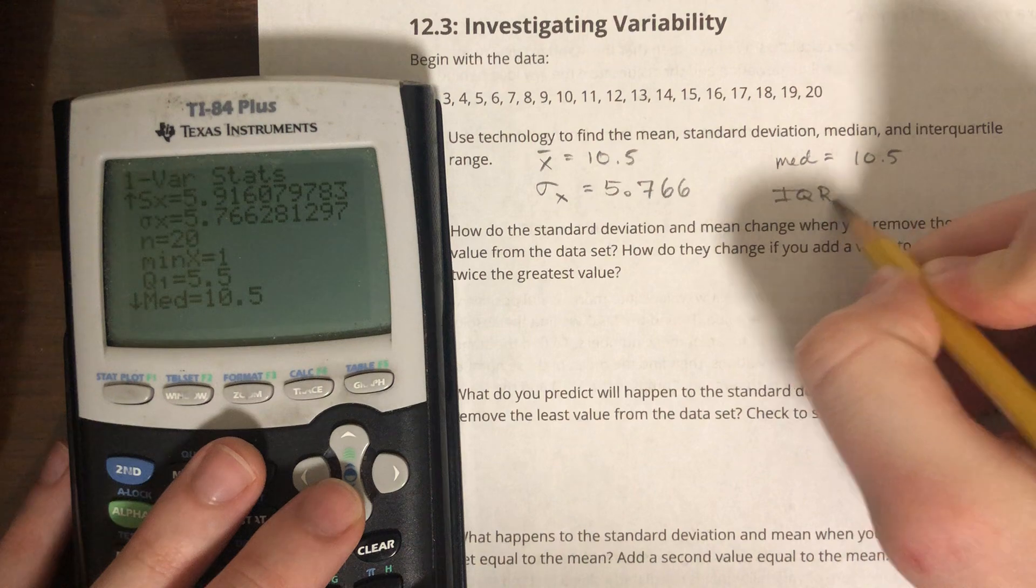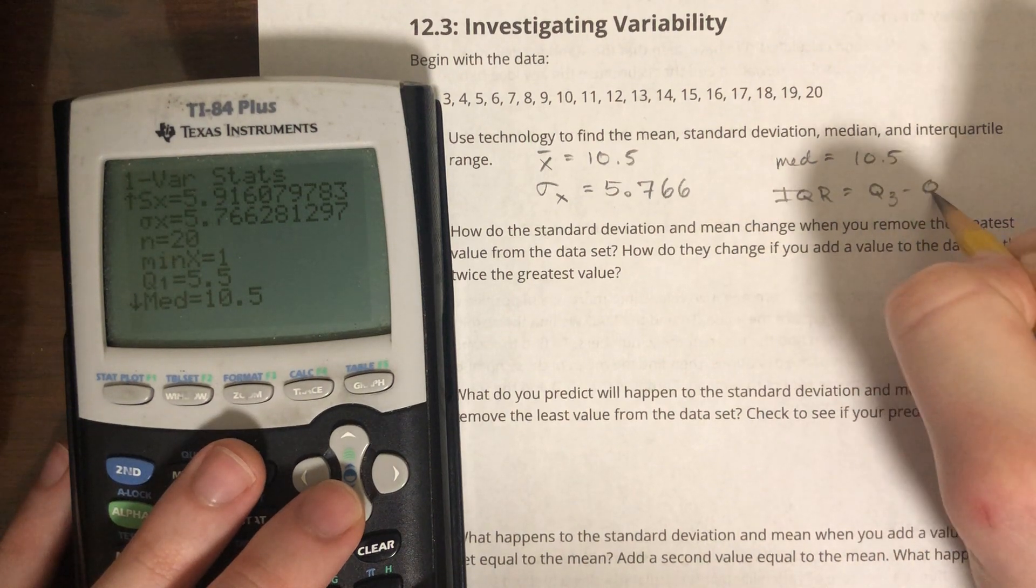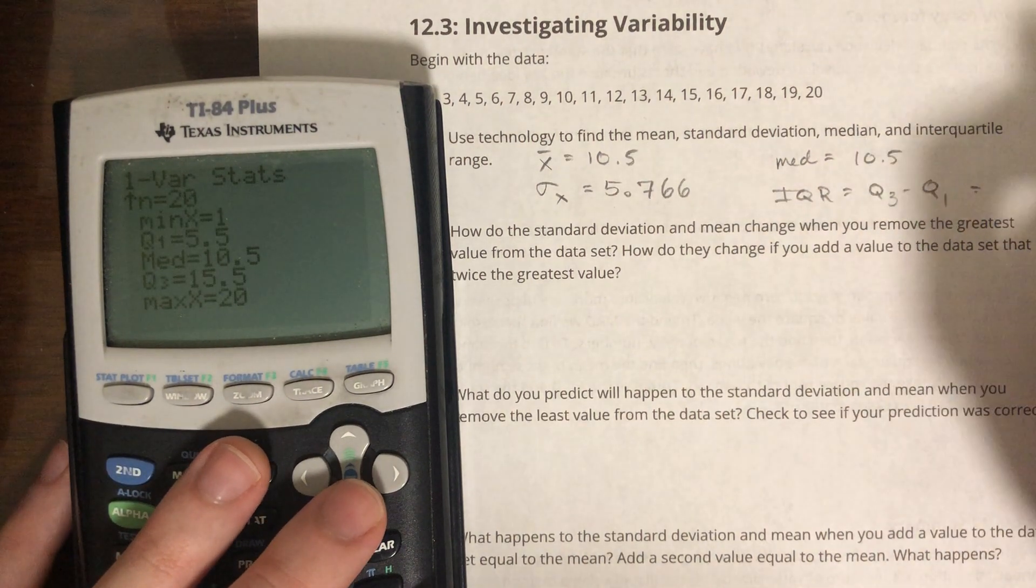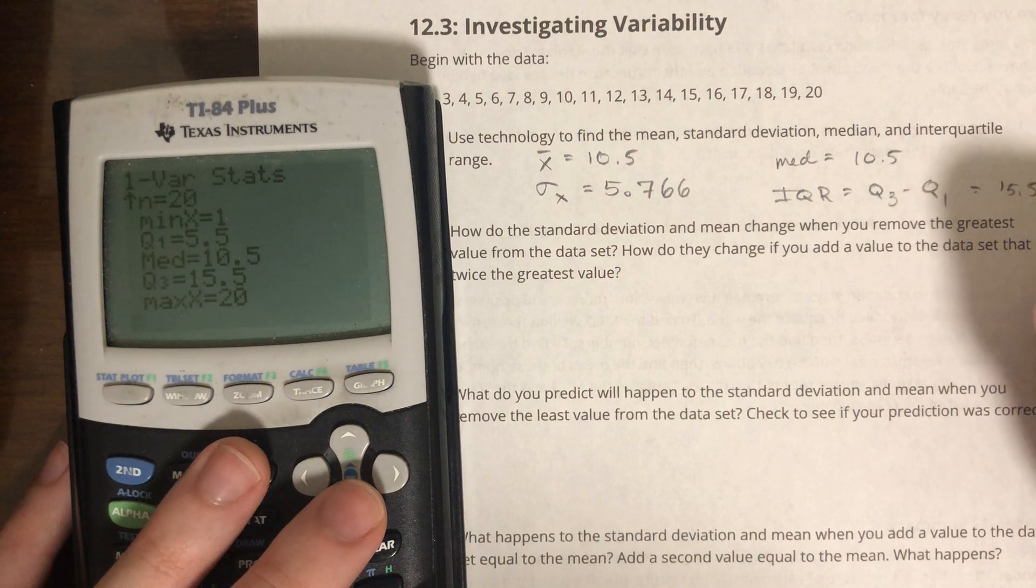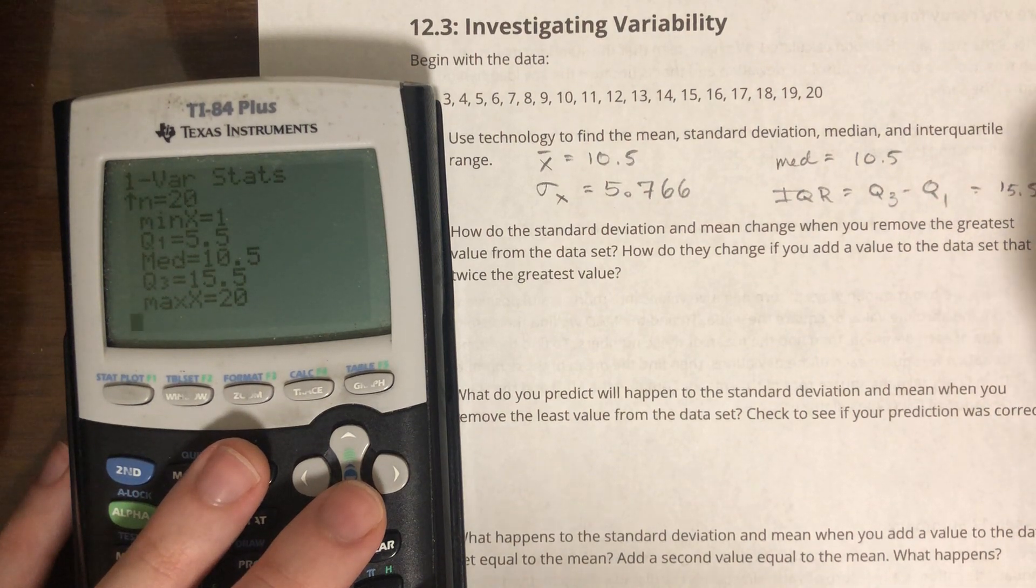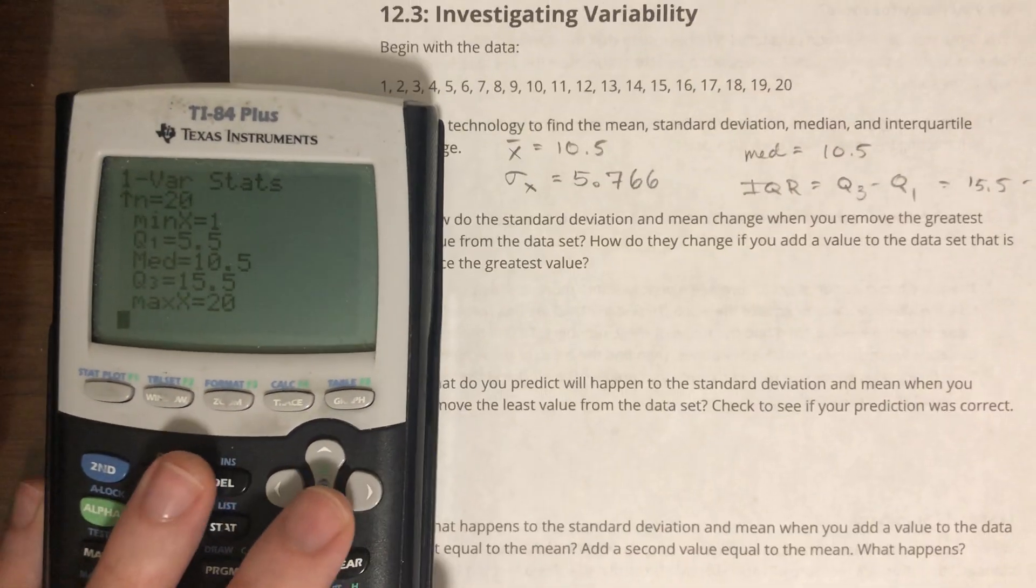My IQR is just going to be Q3 minus Q1, or 15.5 minus 5.5, so that's an IQR of 10.